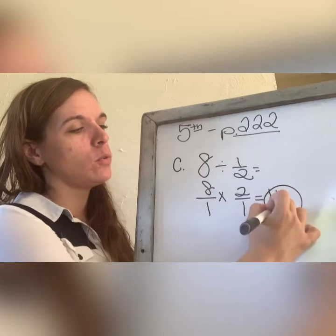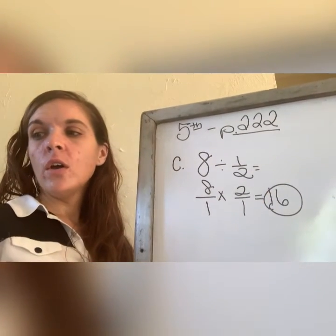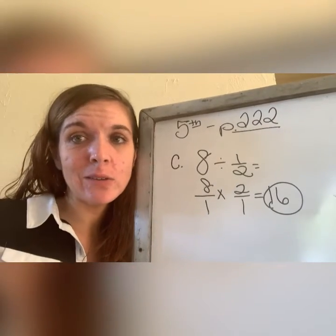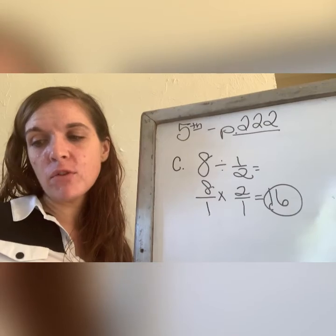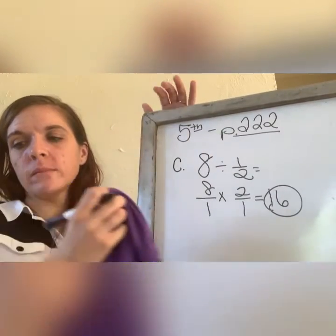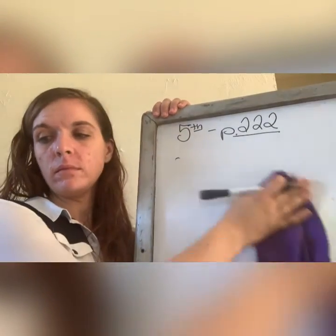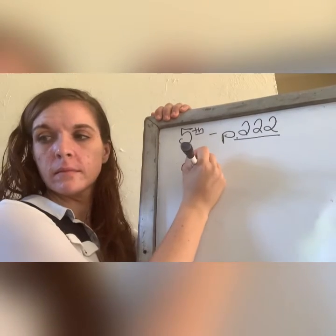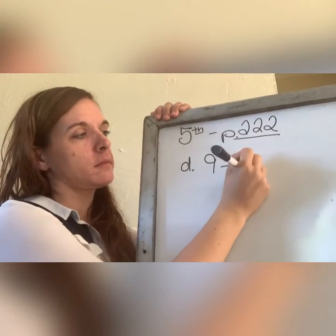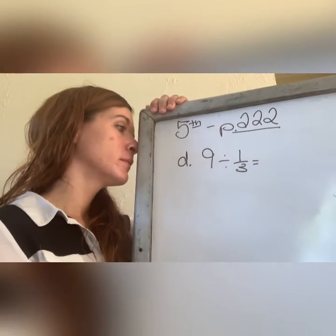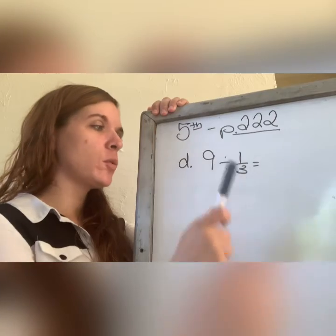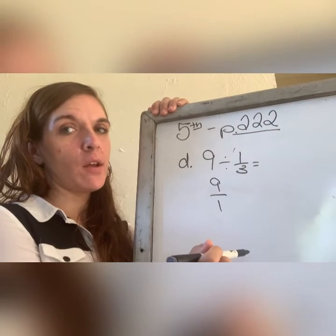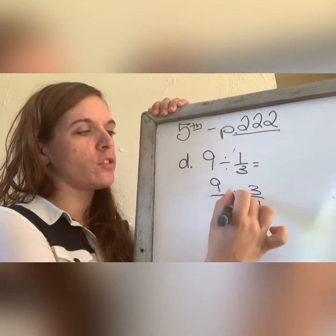Well really guys, you really know how to do it. I'll give you one more. Try letter d by yourself. Oscar, you want to help me out? What do you do with the nine? Put a one underneath, good. What do you do with the one third here, Danielito? Flip flop and multiply, very cool. So what's your answer, Mario? Twenty-seven.